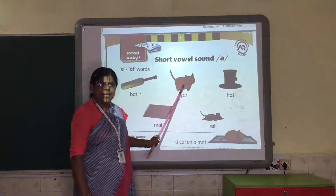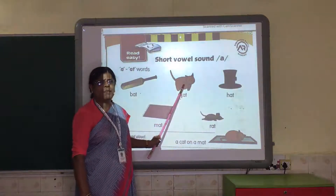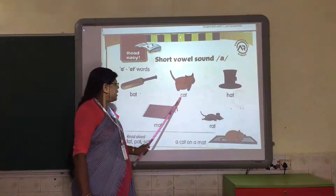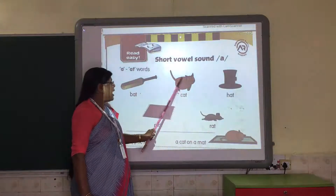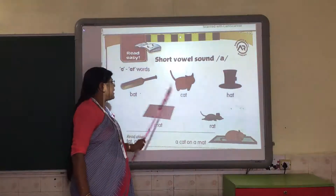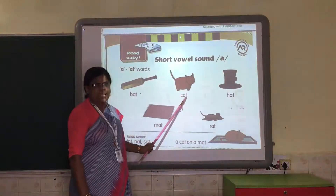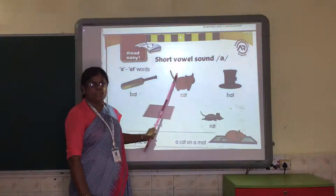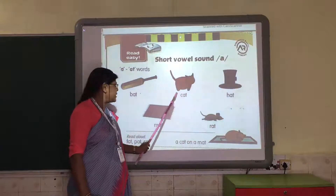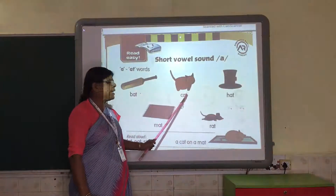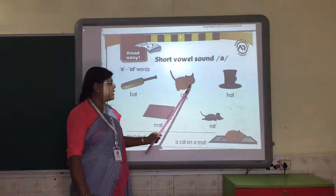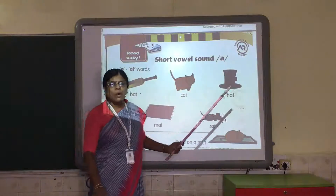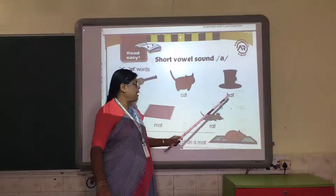Now here in the picture you see cat. We are taking C and then adding A-T — a new word is formed. C-A-T — cat. C-A-T — cat. Again a new word we can form.